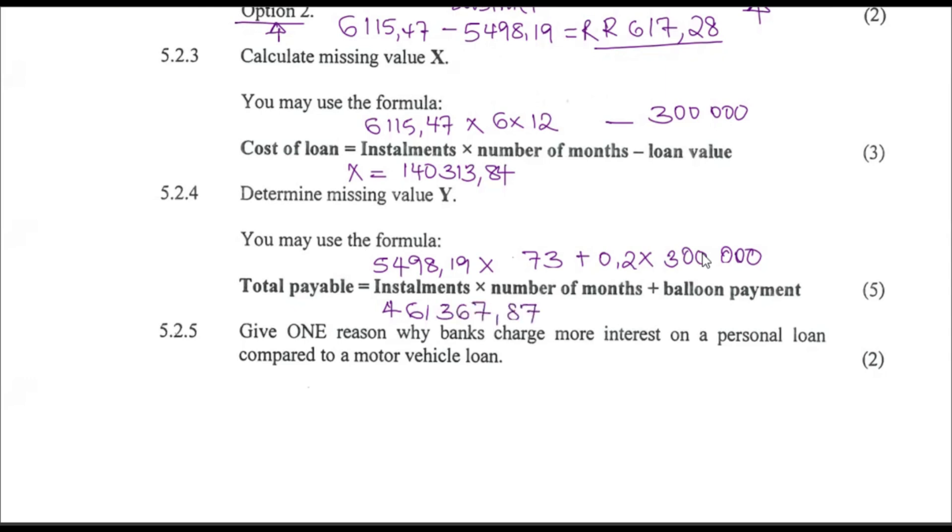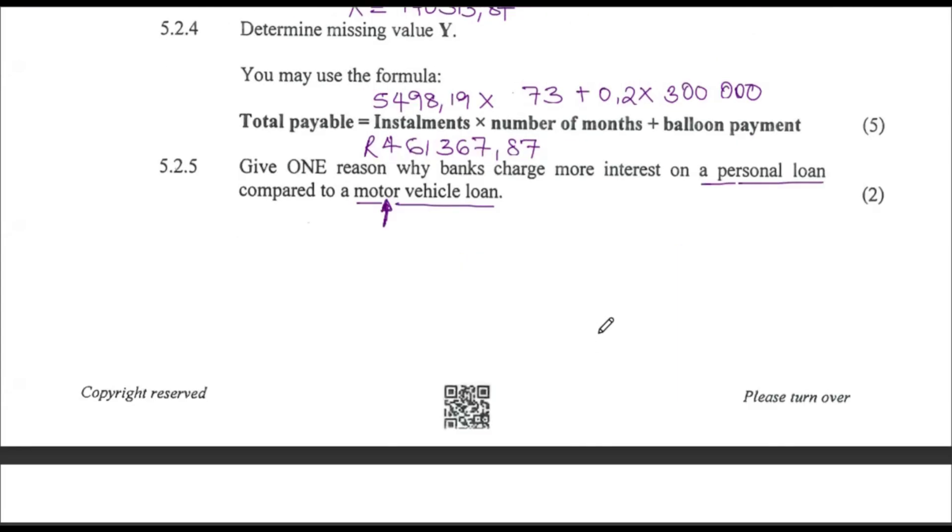Give one reason why banks charge more interest on personal loans compared to motor vehicle loans. For personal loans, you don't know what the person is going to use the money for. But for the car loan, the moment you miss an installment, they will come and repossess the car. They still have the car in their hands. You don't own it fully. But for personal loans, they have no control over what you're using the money for. The car is half theirs, half yours.